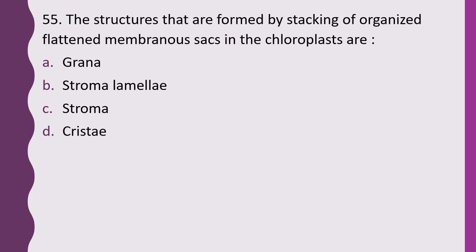Question 55. The structures formed by stacking of organized flattened membranous sacs in a chloroplast are: granum, stromal lamellae, stroma, or cristae. The correct answer is option A, grana.